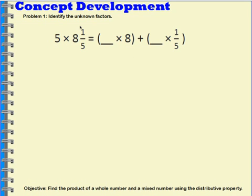So what are we multiplying eight and one-fifth by? We're multiplying it by five. So a five would go here and a five would go here.